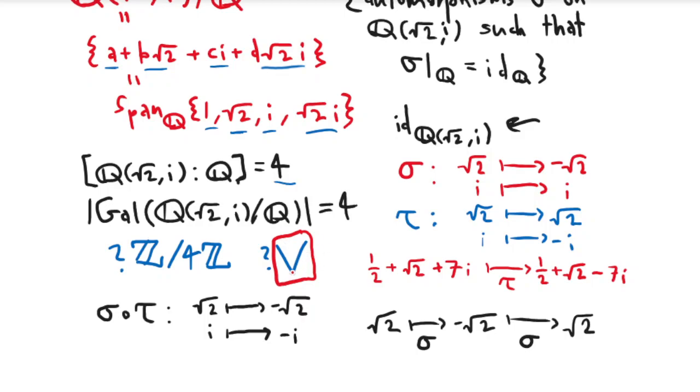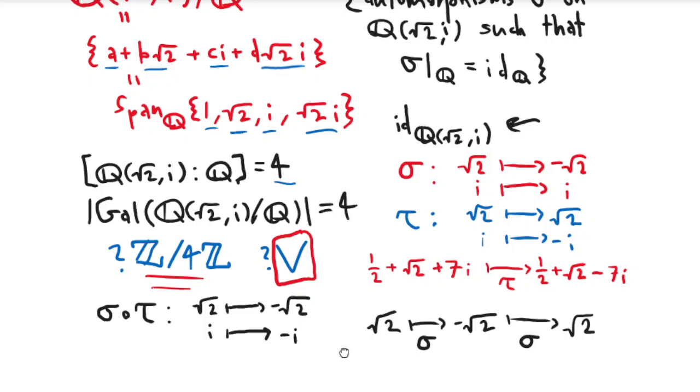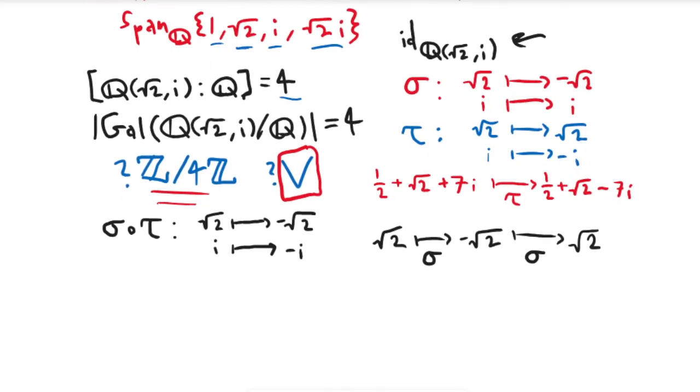Every element of the Klein-4 group squares to the identity. But that's not true for this group because it's a cyclic group. And so to go back to the original problem we were trying to solve, we were like, what is the Galois group of this extension? What was the Galois group of Q adjoin √2, i over Q? We knew it had four elements, but by sort of enumerating the elements explicitly, we figured out that it's actually equal to V.